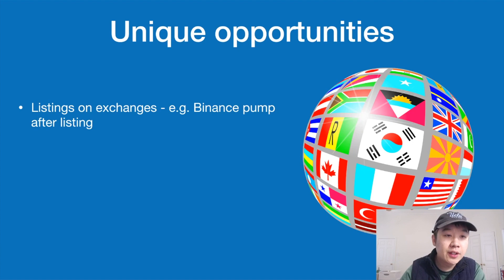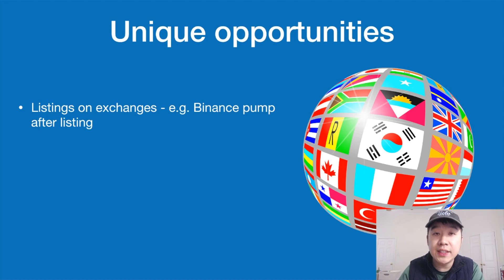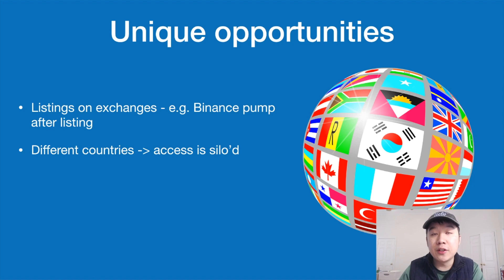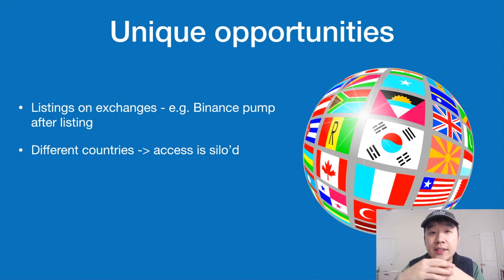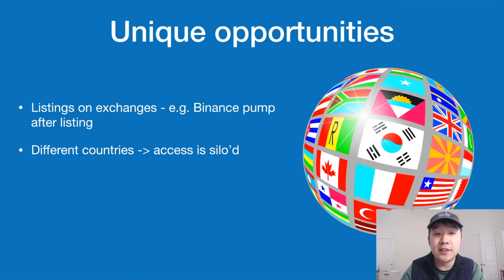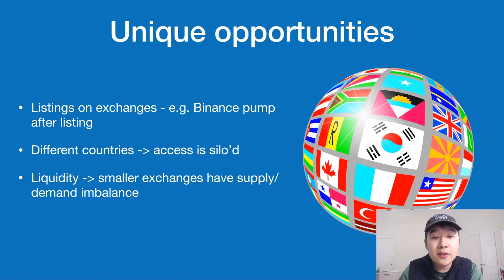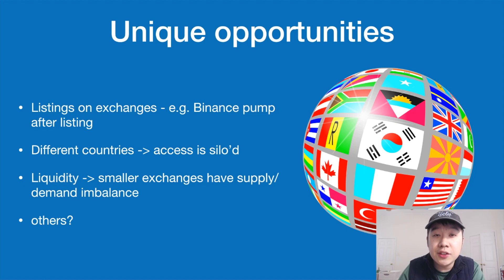Some unique arbitrage opportunities include when a coin gets listed on an exchange. For example, every time a coin gets listed on Binance it pumps significantly, creating an arbitrage opportunity between Binance and other exchanges that already have it listed. Different countries also create price differences, though access is often siloed — Korea had big price differentials but you generally needed Korean citizenship or a Korean bank account to sign up for a Korean exchange. Liquidity is another factor: smaller exchanges may show big price differences but lack the liquidity needed to actually execute the trade. If you know of other opportunities, let me know in the comments.